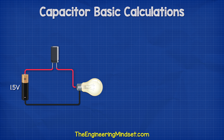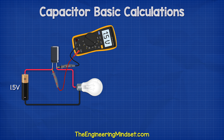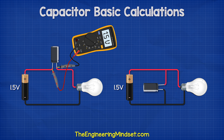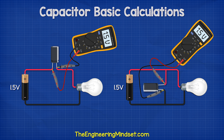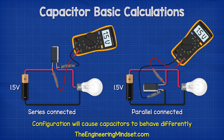We know that the capacitor will charge up to the voltage of the battery. So if we connect a capacitor like this, the voltage across the capacitor will be 1.5 volts. These are just two different ways to connect capacitors in our circuits: series and parallel. The configuration will cause the capacitors to perform differently.